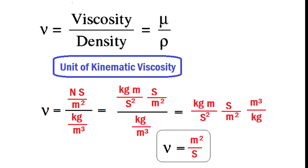In MKS and SI units, the unit of kinematic viscosity is meter square per second. In CGS unit, it is written as centimeter square per second, also known as stoke.